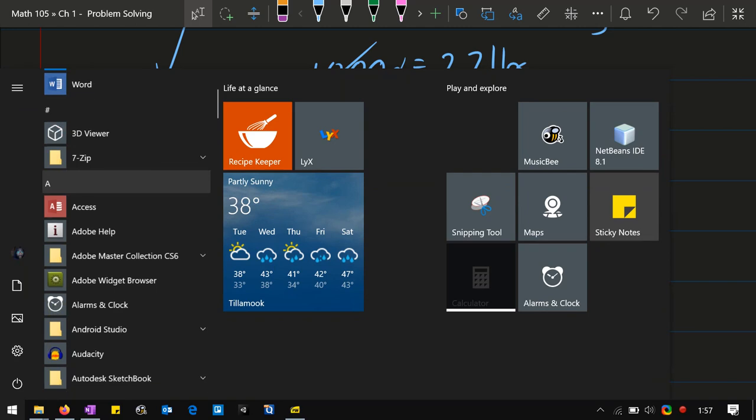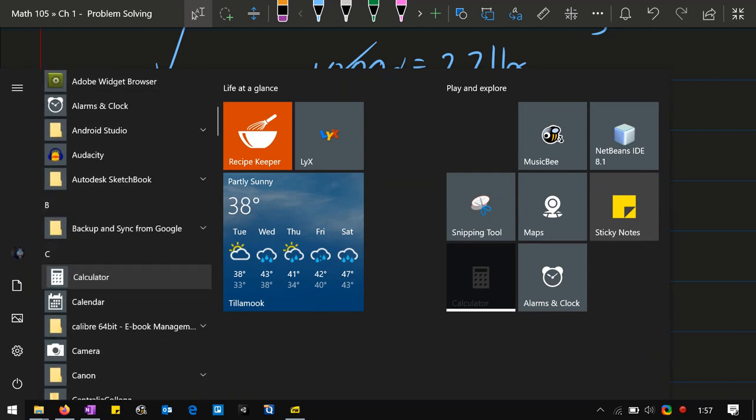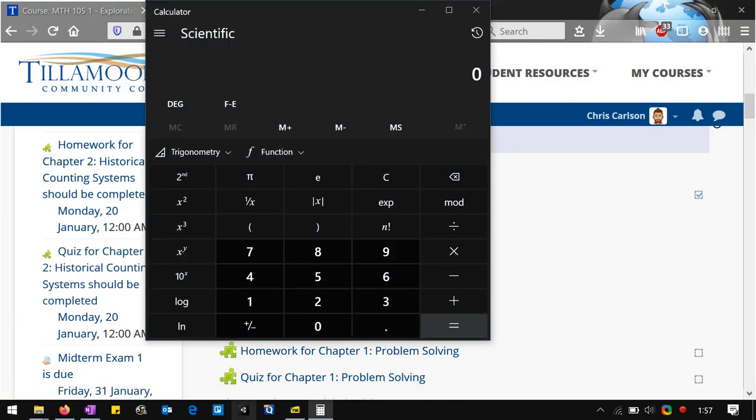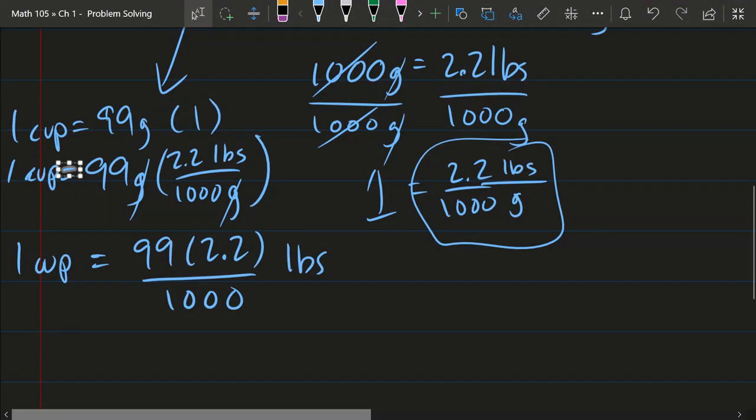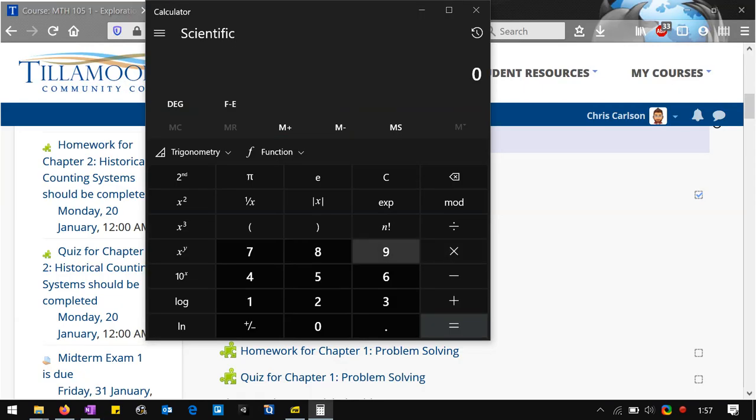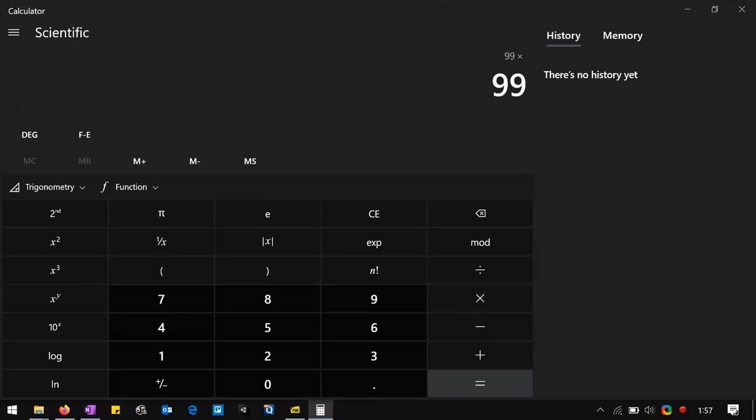Any calculator will do. I'm just going to use the one that's already built in. We need 99 times 2.2 divided by 1,000. So that's 99 times 2.2 divided by 1,000. 0.2178.